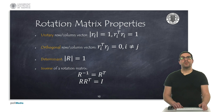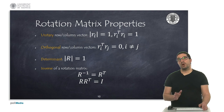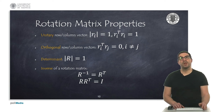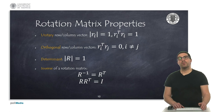Rotation matrices have interesting properties. Specifically, both their columns and rows are always unit and orthogonal vectors. The determinant of a rotation matrix is always 1, while the inverse of a rotation matrix is equal to its transpose. This is a very useful property when we want to apply rotations in the opposite direction.